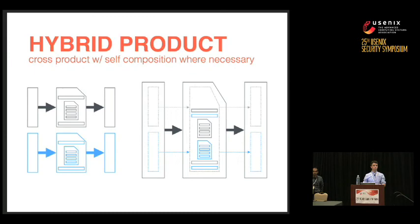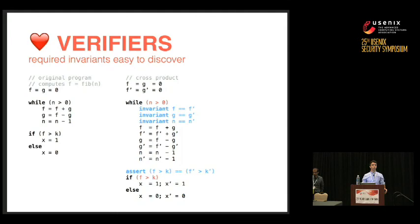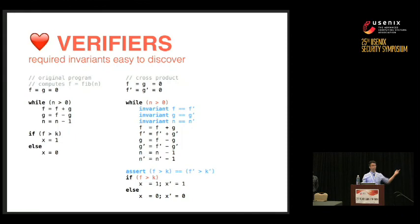Q&A: Asked how loop invariants are generated without user input, the speaker explains the tool is aware that translation duplicates all program variables into unprimed and primed versions. It performs liveness analysis at each loop head and outputs the invariant f equals f′ for every live variable. In practice this works well. There have been one or two contrived examples where an invariant had to be removed because it wasn't actually an invariant, but in most cases it works. Full automation for completeness remains an open question.